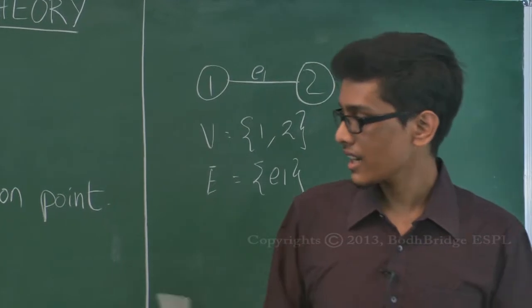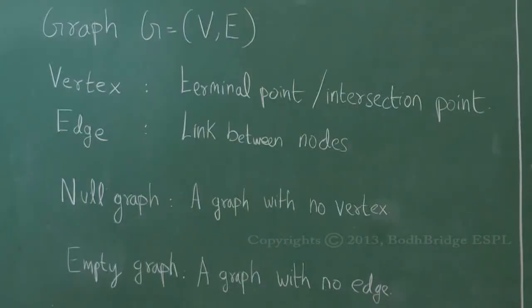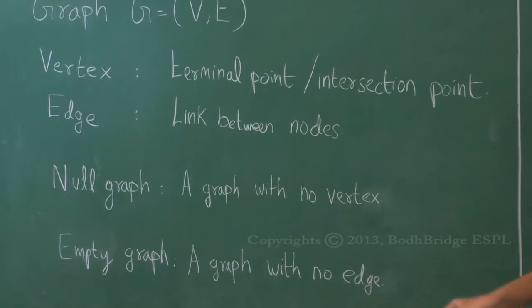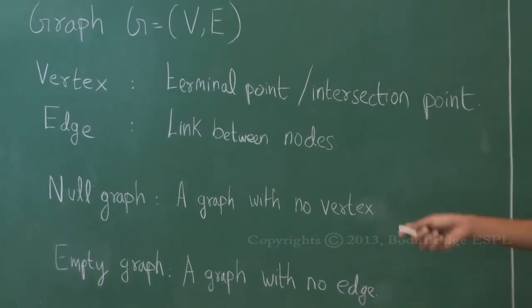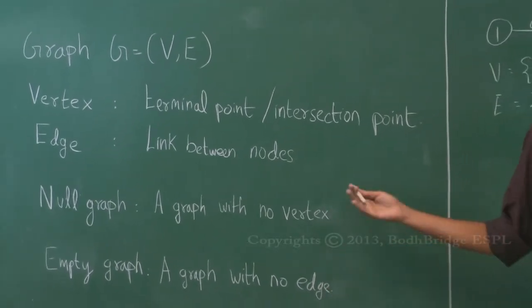A null graph is a graph with no vertex, and obviously since edges connect vertices, no edges either. For all practical purposes we will not be handling null graphs. An empty graph is a graph with no edges — there may be vertices in an empty graph but there will not be any edges. So a null graph is definitely an empty graph, but the converse is not true.